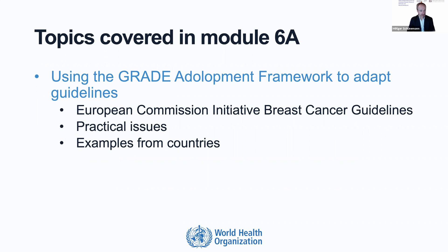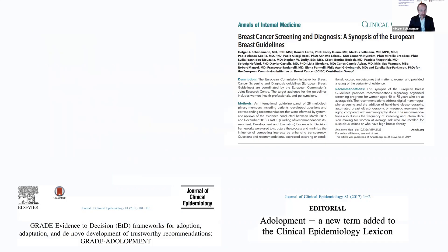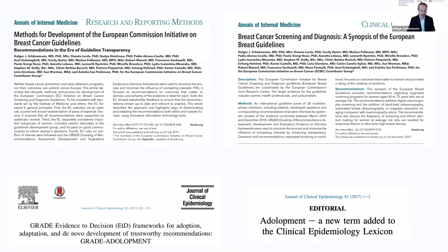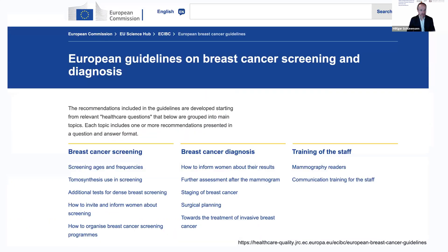I will focus on practical issues in this brief presentation and will present one example from a country — Tunisia. These breast guidelines have been published in the Annals of Internal Medicine. Information about adoptment can be found in the Journal of Clinical Epidemiology, and the detailed methods are also available in an article published in the Annals of Internal Medicine.